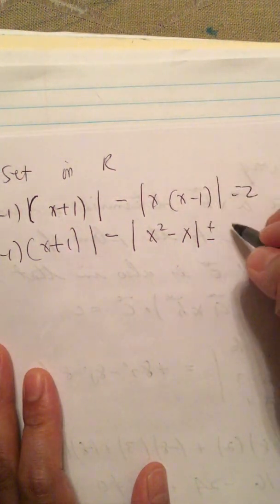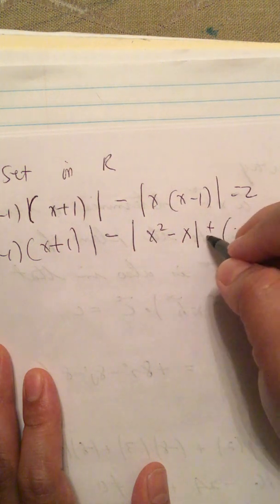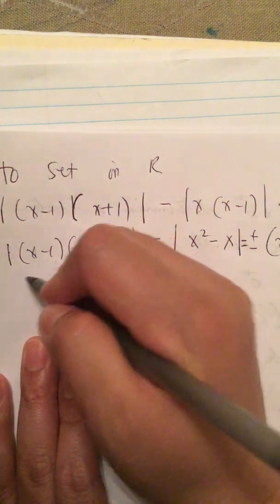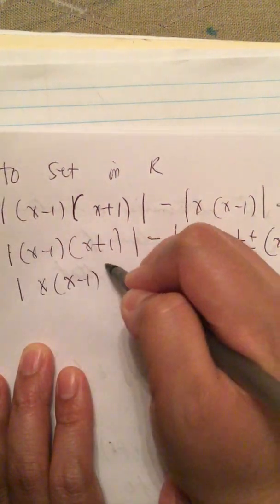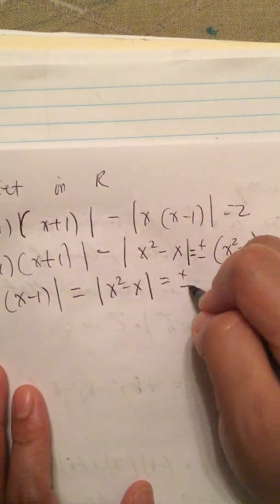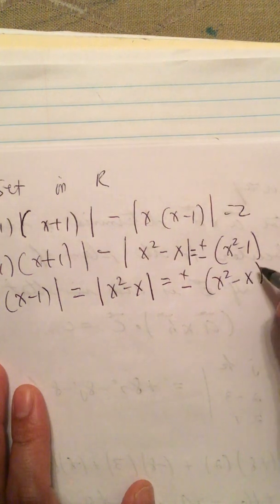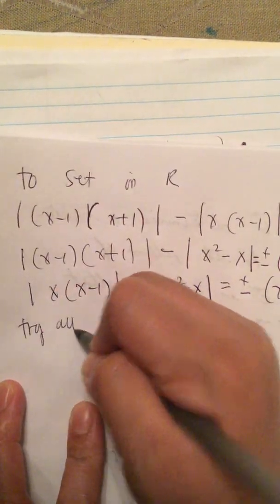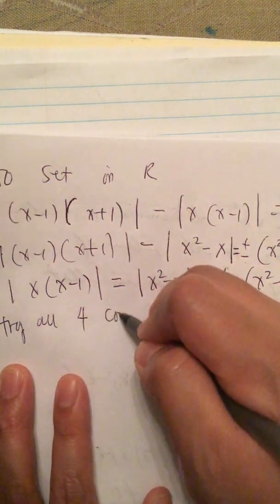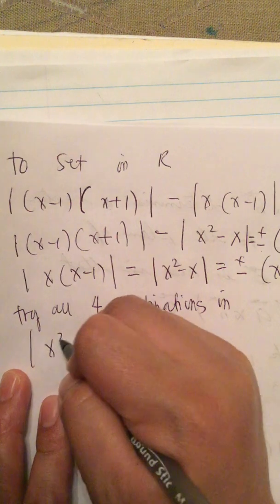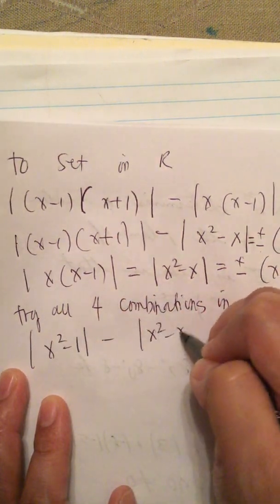This gives plus or minus x squared minus 1, and x times x minus 1 equals x squared minus x, which equals plus or minus x squared minus x. So we try all four combinations, because these are plus or minus, plus or minus — a total of four combinations.